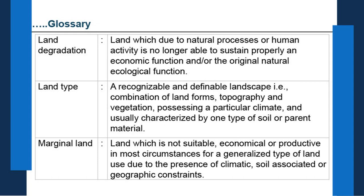Land degradation — land which, due to natural processes or human activity, is no longer able to sustain properly an economic or the original natural ecological function is said to be degraded land. Land type — a recognizable and definable landscape that is a combination of landforms, topography and vegetation, possessing a particular climate and usually characterized by one type of soil or parent material. Marginal land — land not suitable economically or productive in most circumstances for a generalized type of land use due to climatic, soil, or geographical constraints. It is poor in fertility and its productivity is also low.